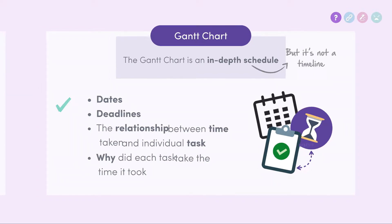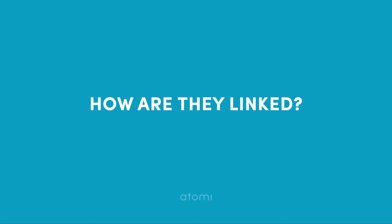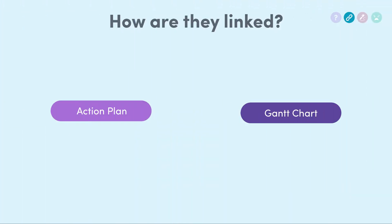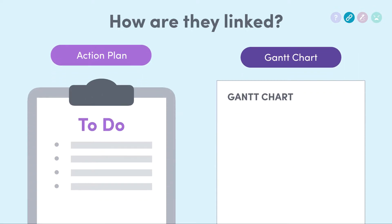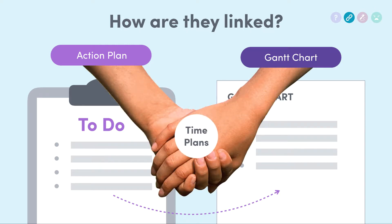Now that we understand what both of these components are, let's move on to understanding how they are linked. The connection is pretty straightforward. We are going to be taking all the components from the action plan and placing them on the Gantt chart to form our time plan. This is a step-by-step guide, so we are going step-by-step from the action plan to the Gantt chart. These pages work hand in hand to form the basis of our time plan.